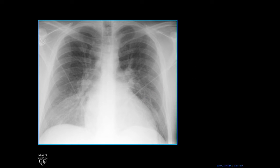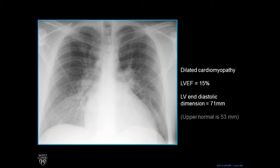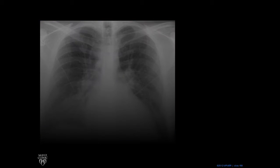You can also see how the border goes below the diaphragm, and the tip is actually way down there. This patient had a dilated cardiomyopathy, which makes the heart — the left ventricle — very big and very thin and poorly contracting. The left ventricular ejection fraction was 15%, with normal being 50% — very abnormal. The left ventricular end diastolic dimension, which is like the internal diameter of the cavity, was 71 millimeters, where the upper limit of normal is 53 — so very dilated, very poorly functioning.